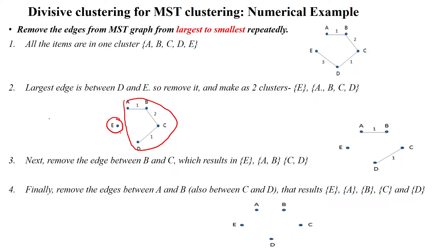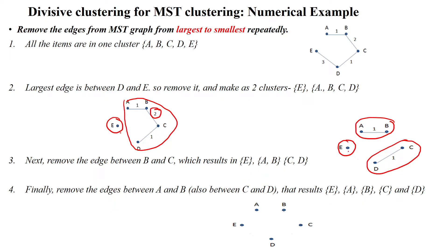We repeat the same process — select the next highest edge, which is 2. Removing this edge gives us 3 clusters: A and B form one cluster, C and D form another cluster, and E is the third cluster.